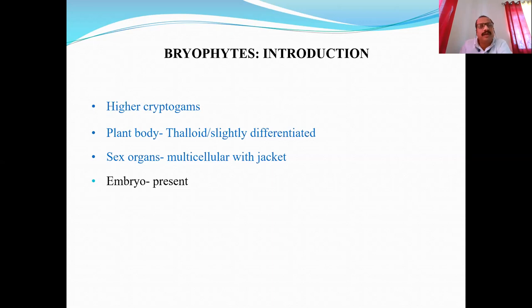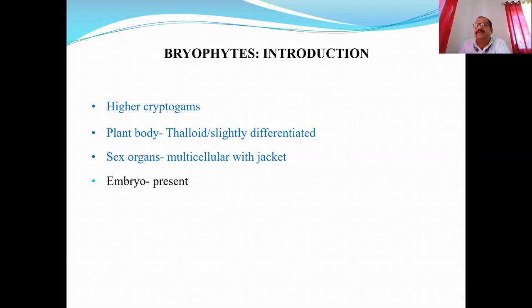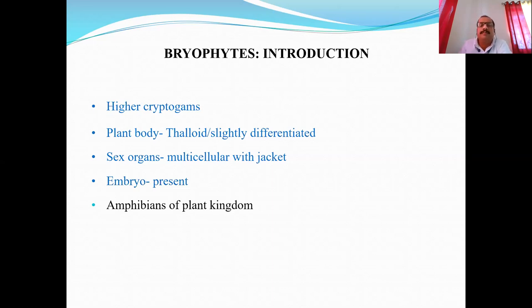Plants may be aquatic — for example, algae — or terrestrial — for example, pteridophytes, gymnosperms, angiosperms. But in between these two extreme habitats, there are certain plants which grow where land and water meet, such as marshy areas or moist, humid, damp places. Such a habitat is called an amphibious habitat, and those plants which grow in such areas are called amphibious plants — the amphibians of the plant kingdom. Bryophytes are exactly the amphibians of the plant kingdom.